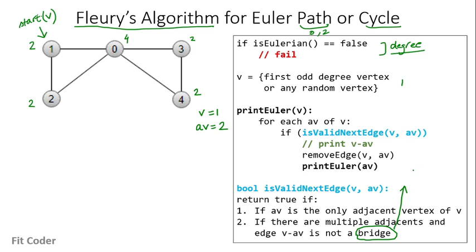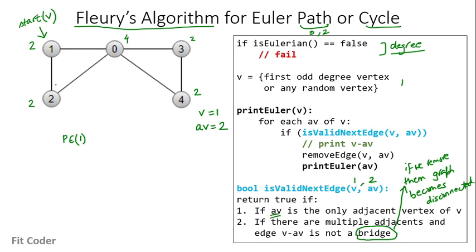Bridge edges are those edges that, if removed, make the graph disconnected. So we check whether this edge is not a bridge edge. With v=1 and av=2, we invoke isValidNextEdge(1, 2). We check whether av is the only adjacent vertex of v — this is false because 1 has two adjacent vertices: 2 and 0. We check the second condition: if we remove edge (1,2), the graph is not disconnected because we can still reach all vertices. So this edge is not a bridge edge and the function returns true. We print edge 1→2, remove it, and call printEuler for vertex 2.